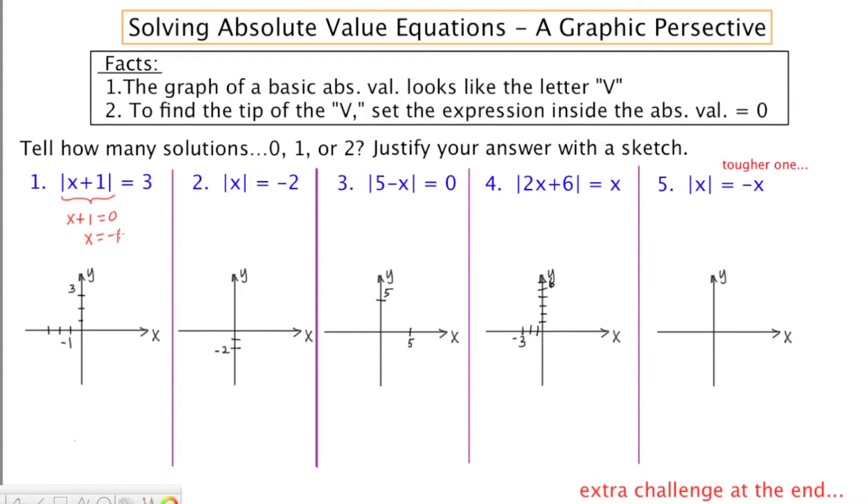Now, for the purposes of these problems, we're not actually going to solve for X. We did that in the last lesson. I just want to discuss how many solutions there might be: zero, one, or two. In order to answer this question, I want you to graph the left-hand side, which will be this V whose tip is at negative 1.